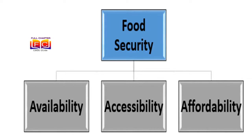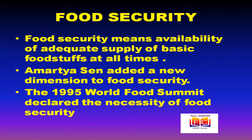Food security depends on the public distribution system and government vigilance and timely action when this security is threatened. Food security means availability of adequate supply of basic foodstuffs at all times. Amartya Sen added a new dimension to food security, emphasizing the access to food through entitlements.